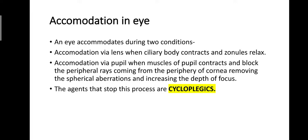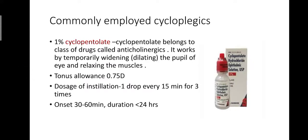During pupillary accommodation, the muscles of the pupil contract and block peripheral rays coming from the periphery of the cornea, removing spherical aberration and increasing depth of focus. Cycloplegics are the agents that stop this process of accommodation.